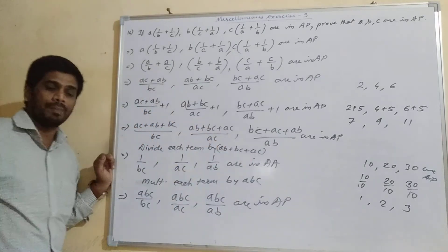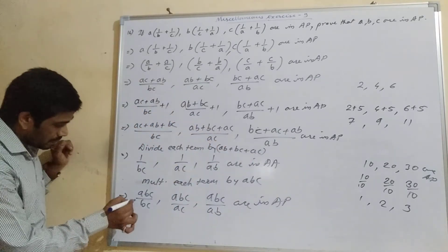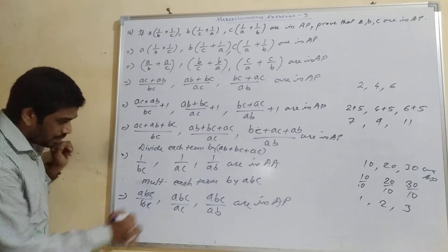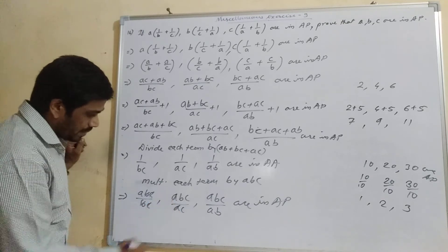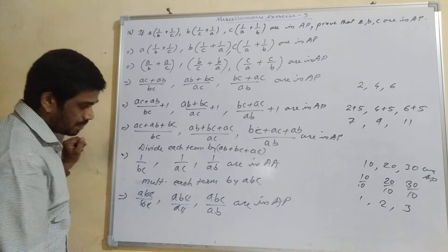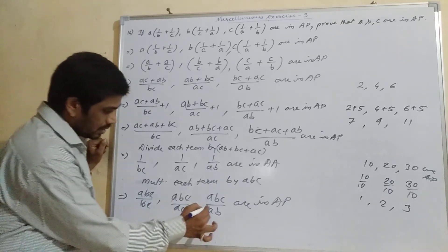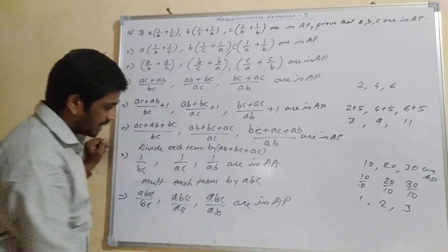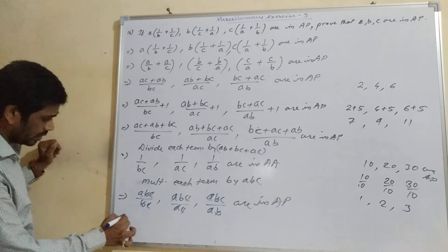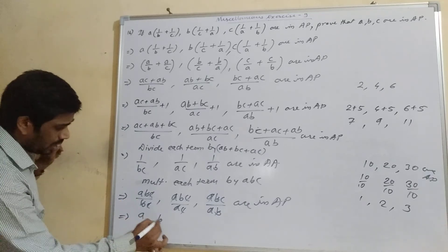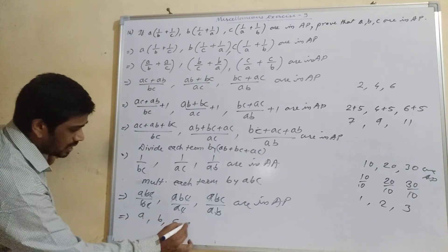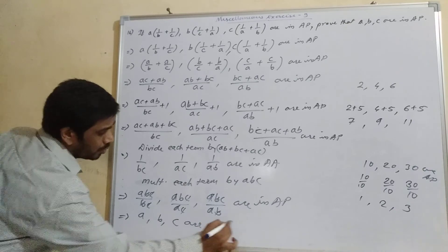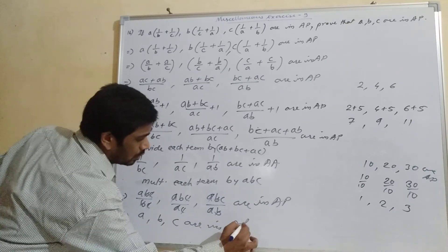This is also in AP. Now B and C cancel in the first term, A and C cancel in the second term, and A and B cancel in the third term. So what we get is A, B, and C are in AP — which is what we had to prove.